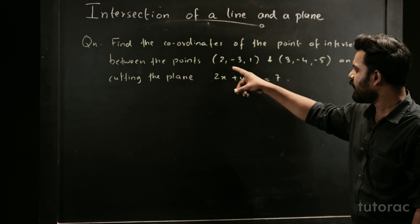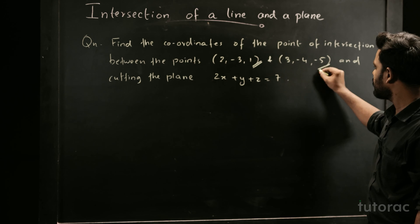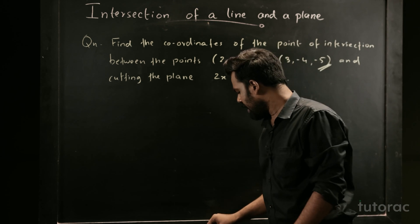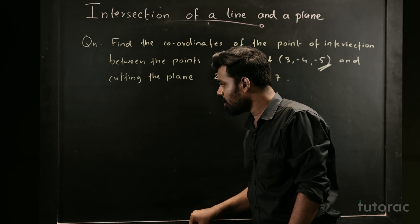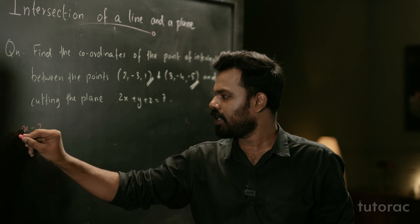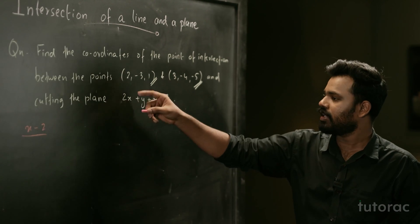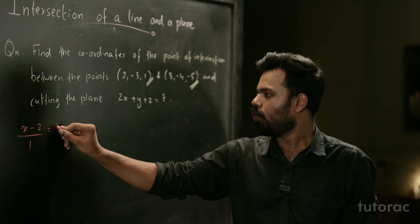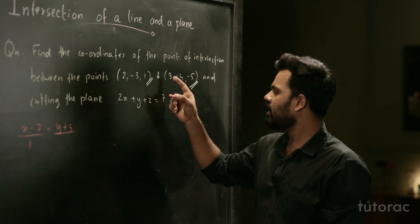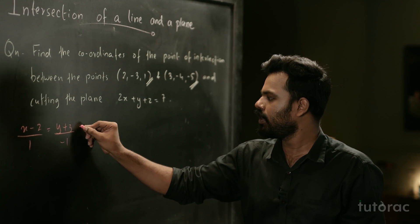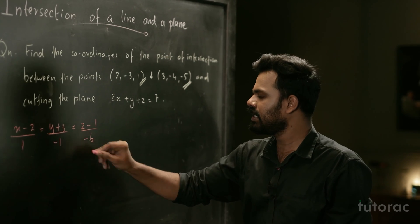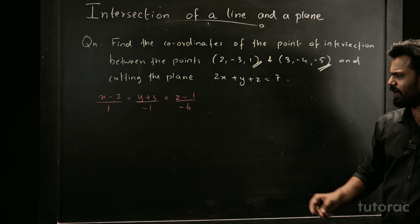First we need to find the line formed between these two points. Using the two-point line equation: X minus 2 by (3 minus 2) equals 1, Y minus (minus 3) — that is Y plus 3 — by (minus 4 minus minus 3) equals negative 1, and Z minus 1 by (minus 5 minus 1) equals negative 6. So we have the equation of the line.